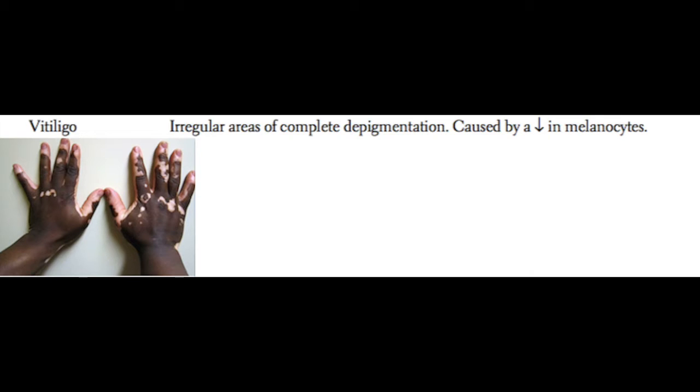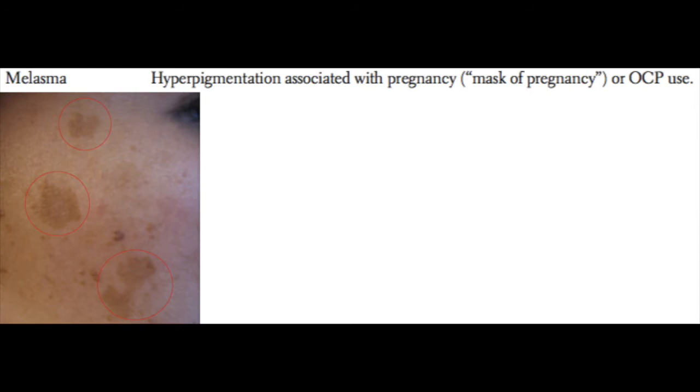Next we have vitiligo — there's a picture on your screen now. Vitiligo is an autoimmune attack on melanocytes, so with the melanocytes being attacked by the body's own immune system, you have a decrease in melanin production and these white hypopigmented lesions throughout the body.